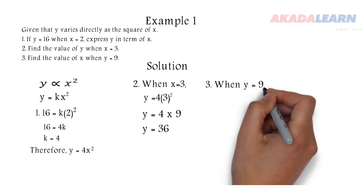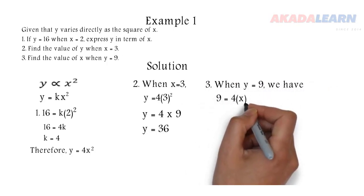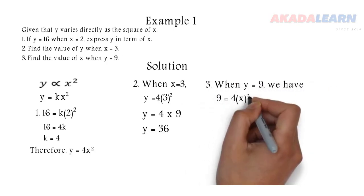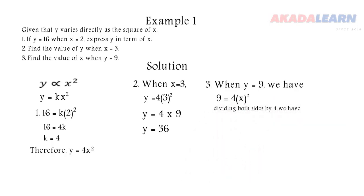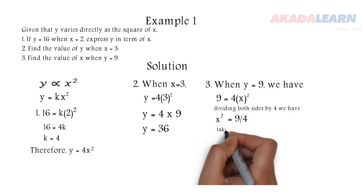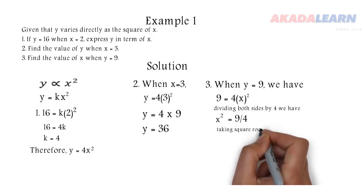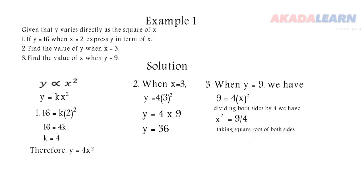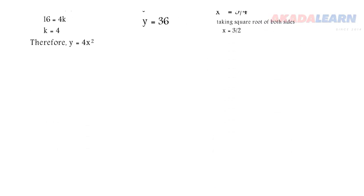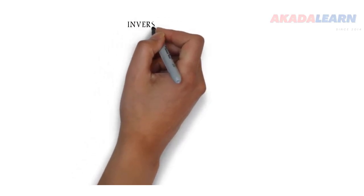For the third part, when y is 9, we substitute into the equation: 9 equals 4x squared. Dividing both sides by 4 gives x squared equals 9 over 4. Taking the square root of both sides, the square root of x squared is x, the square root of 9 is 3, and the square root of 4 is 2, so x equals 3 over 2.